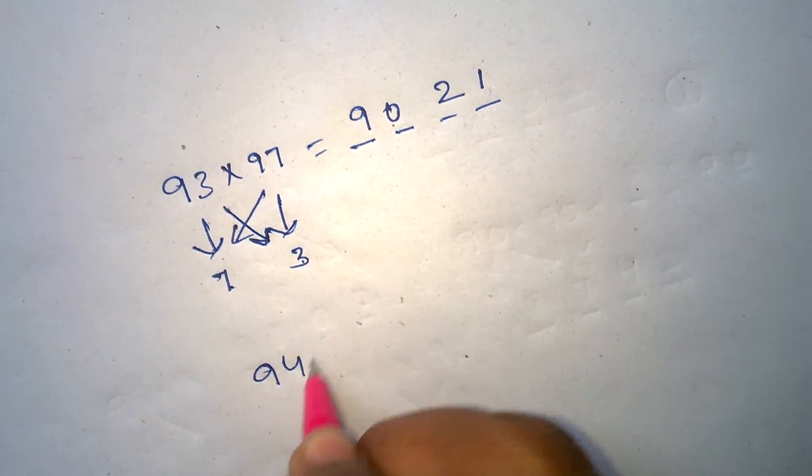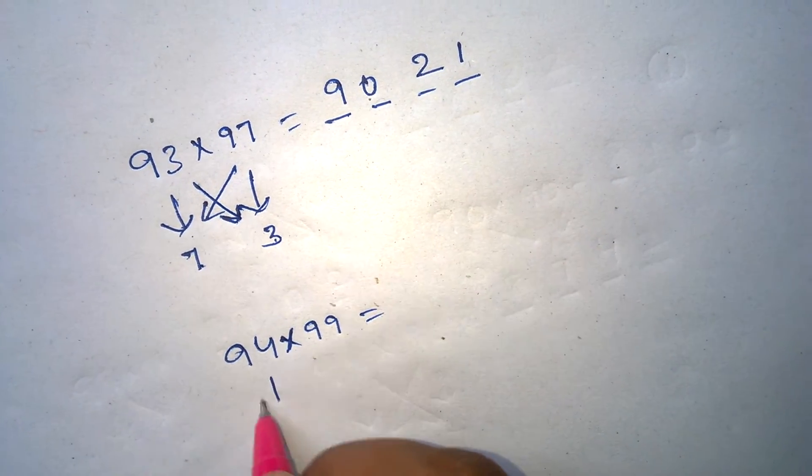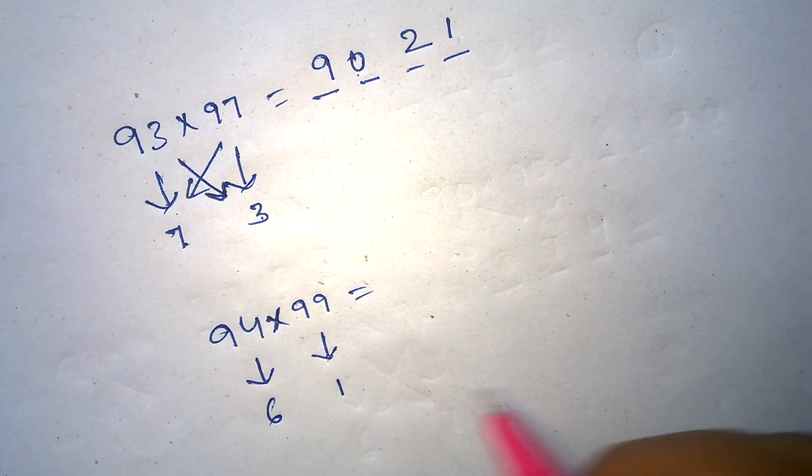Let me show you another example. 94 times 99. 100 minus 94 is 6. 100 minus 99 is 1.